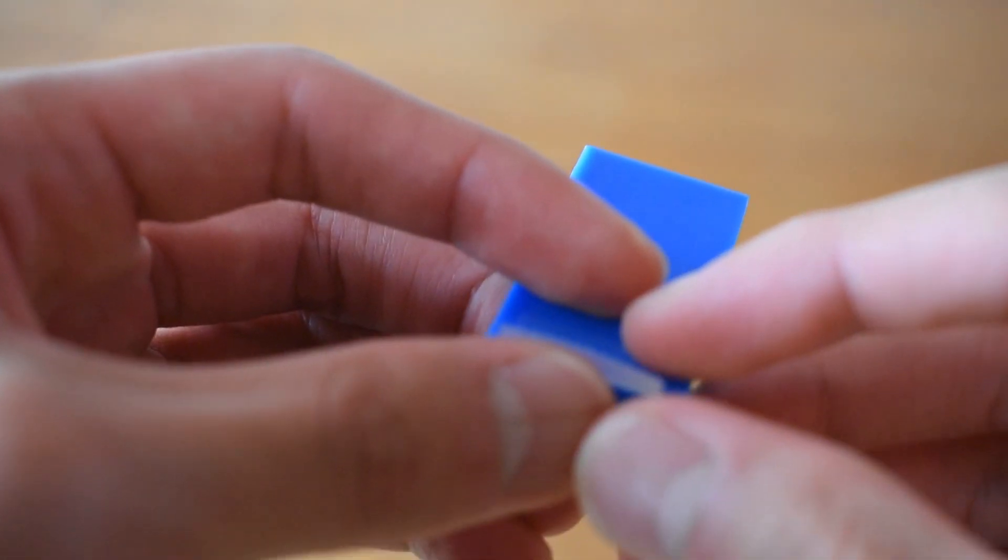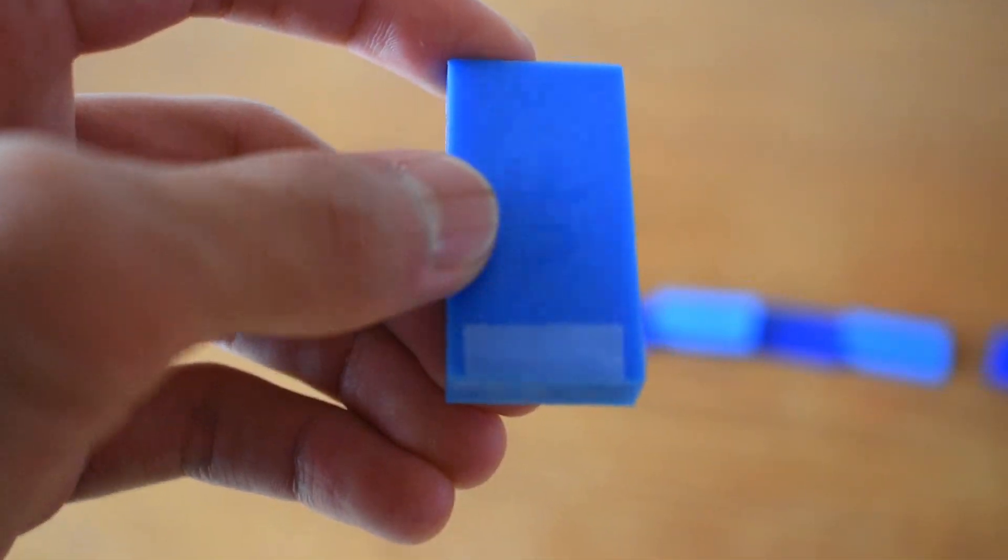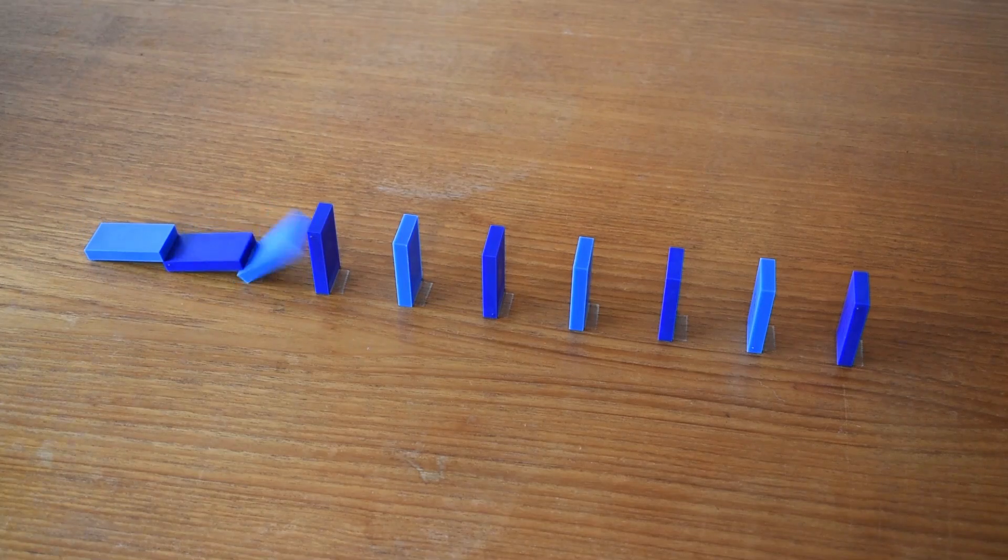And to really make it a tape hinge and not just tape, crease the tape on the domino before measuring it out and setting it on the table. If you do all that right, it should work.